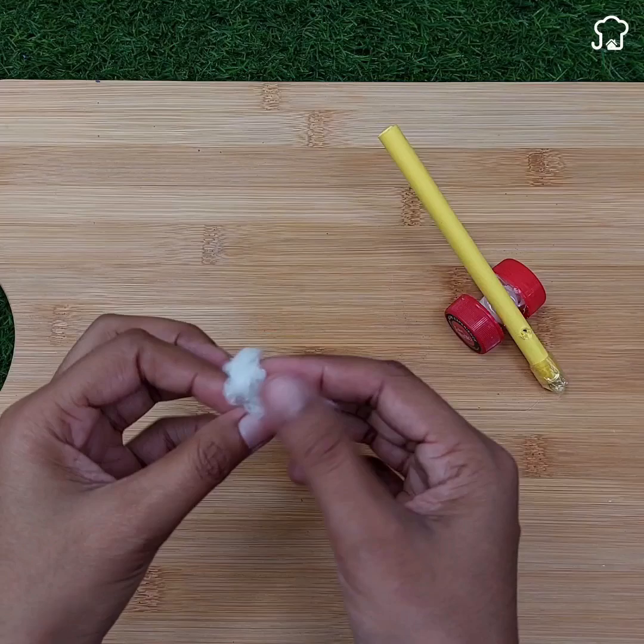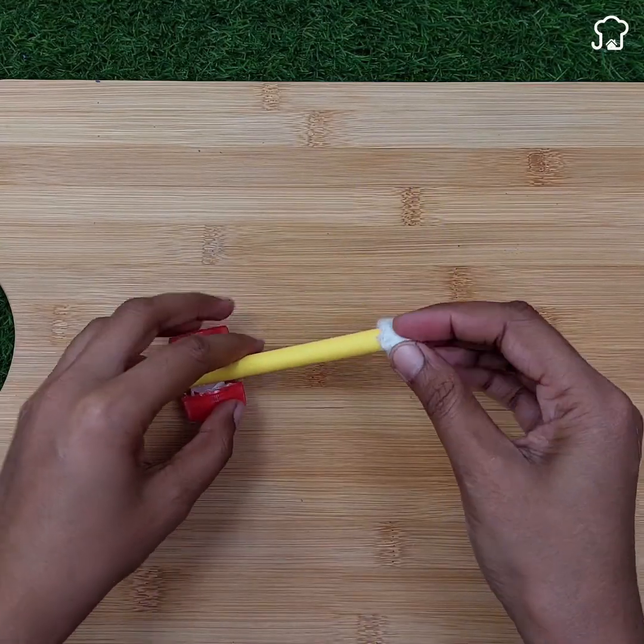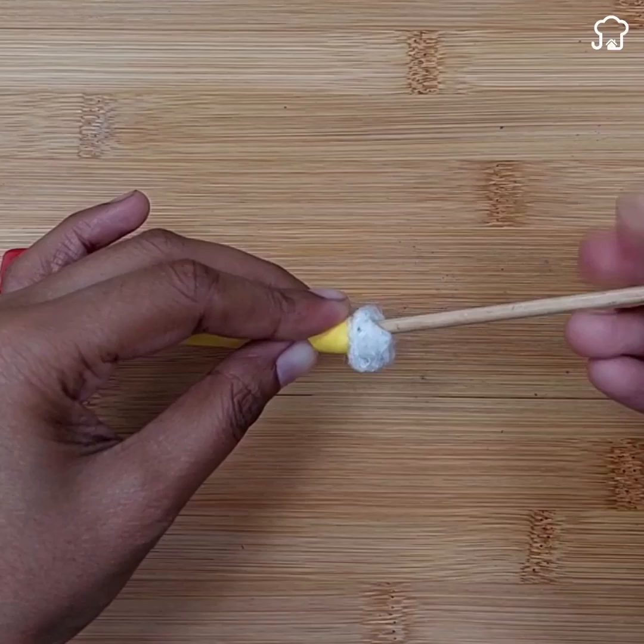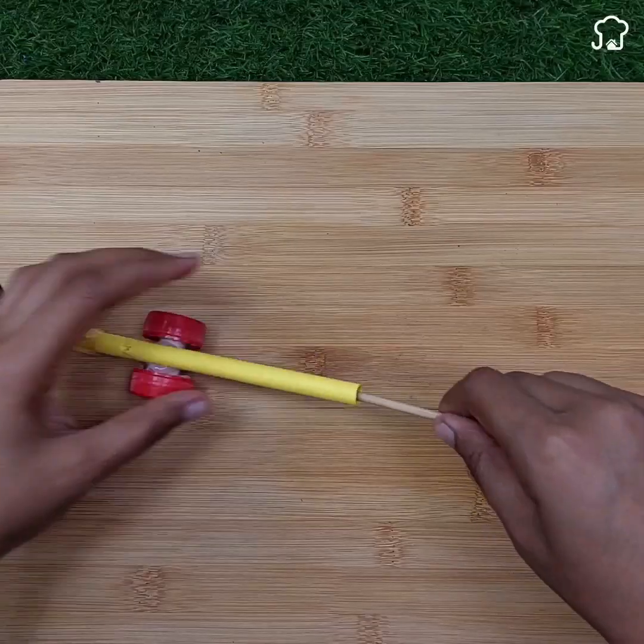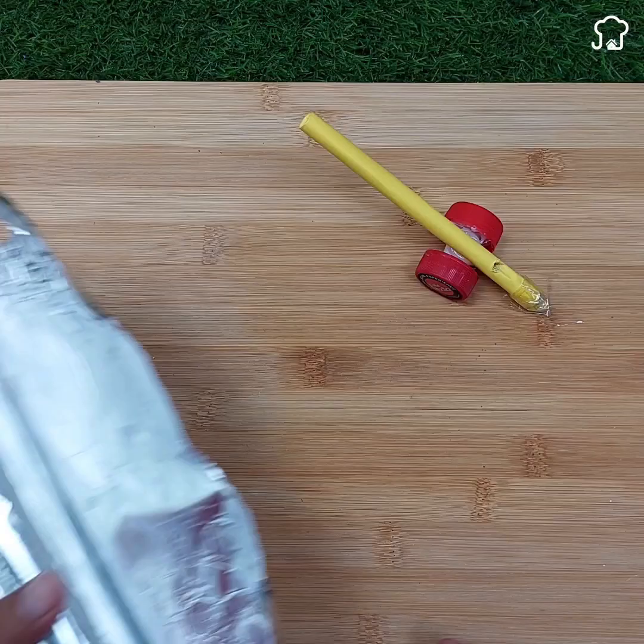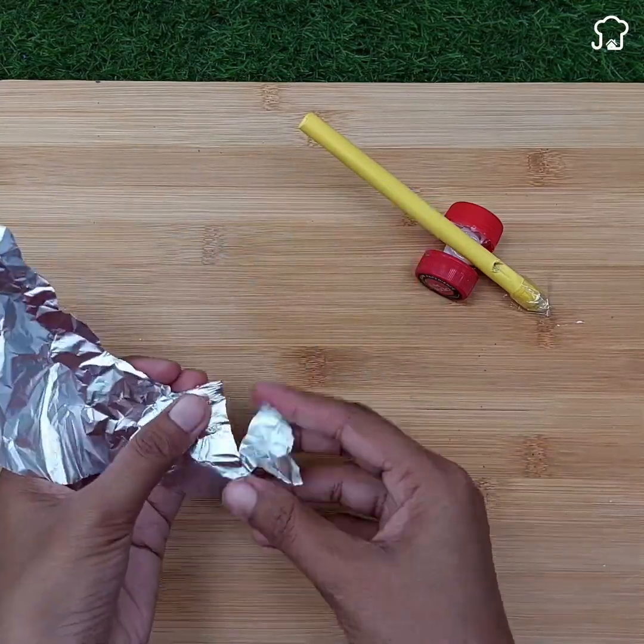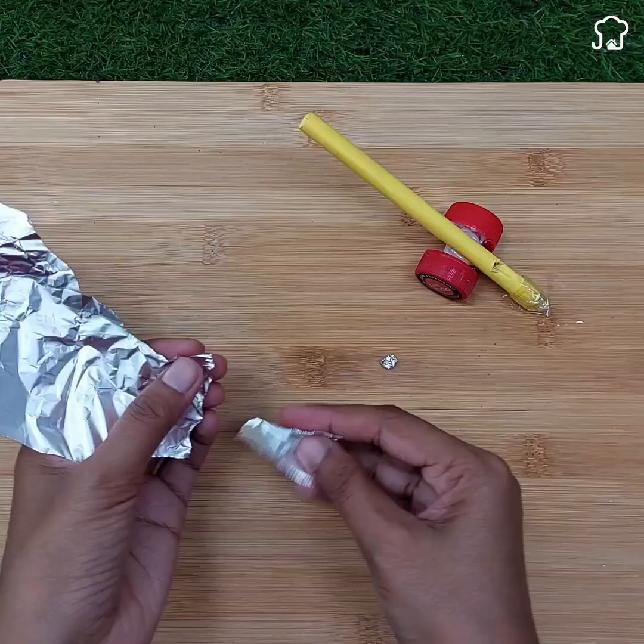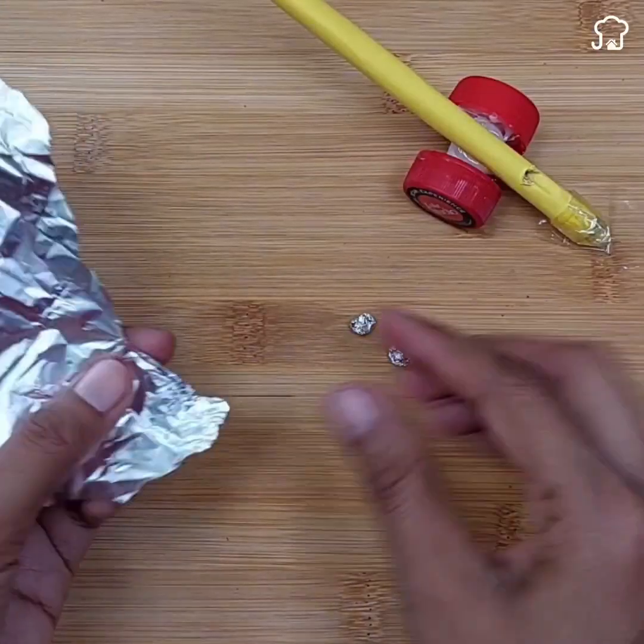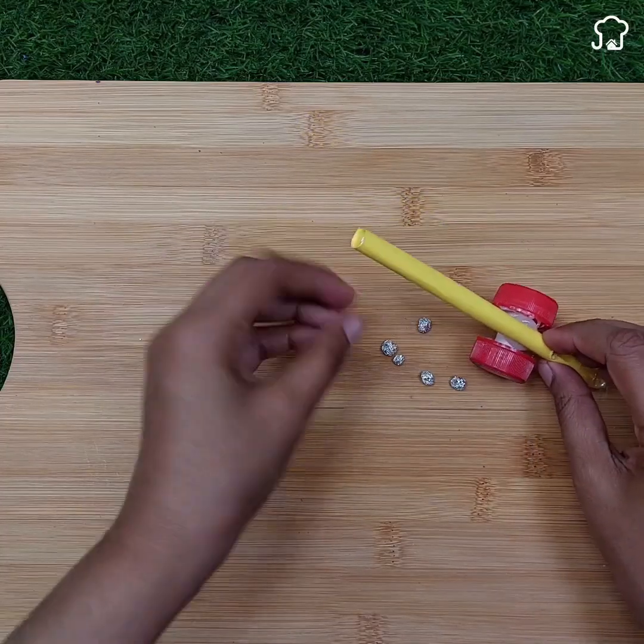Now we take a little cotton and we will enter it through the same cylinder, helping us with the stick again. As a final element, we will use an aluminum sheet of paper and we will make some small balls. Then we add them inside the cardboard cylinder.